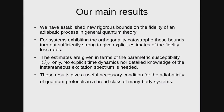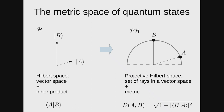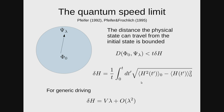Our main results: we have established new rigorous bounds on the fidelity of adiabatic processes in general quantum theory for systems exhibiting orthogonality catastrophe. Our estimates are given in terms of the parametric susceptibility C_N only, and these results give useful necessary conditions for adiabaticity of quantum protocols. The main idea is to exploit the metric structure of the projective Hilbert space. A projective Hilbert space can be thought of as a metric space where the distance between two points is defined as one minus the overlap between the two states squared, square root. Another important ingredient is the quantum speed limit: if you begin to deform the Hamiltonian, the physical state cannot travel arbitrarily far from the initial point — the distance it can travel in time is limited by the quantum speed limit, where delta H is the time average of the uncertainty of the Hamiltonian in the initial ground state.